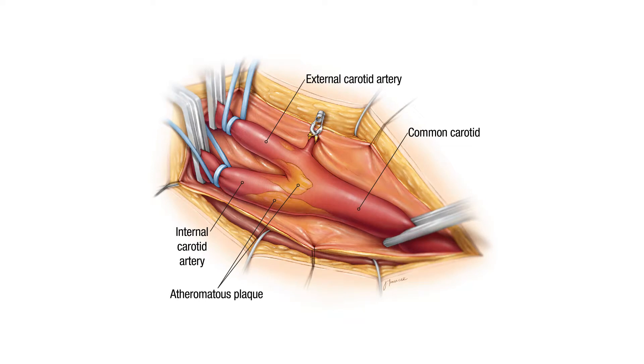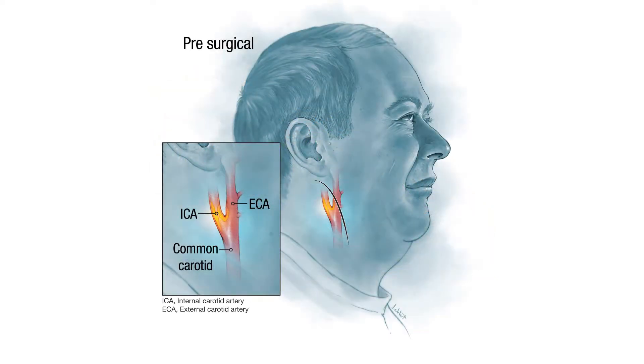Carotid artery stenosis is a condition that has a high risk for producing strokes and TIAs, or transient ischemic attacks. In Western populations, the most common cause for strokes or TIAs is a narrowing in the carotid artery. Stenosis means narrowing, and this occurs in the neck at the carotid bifurcation, where the common carotid artery splits into the internal and external carotid arteries, with the internal carotid artery going directly up into the brain.